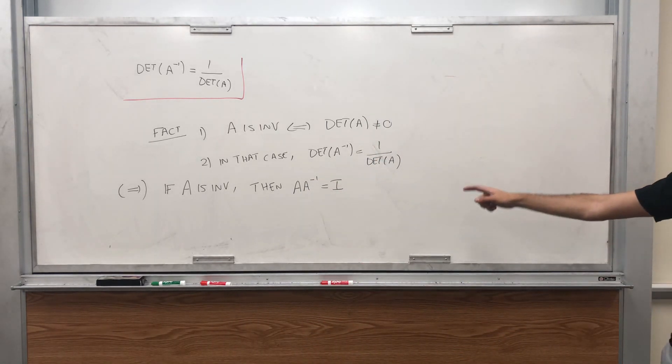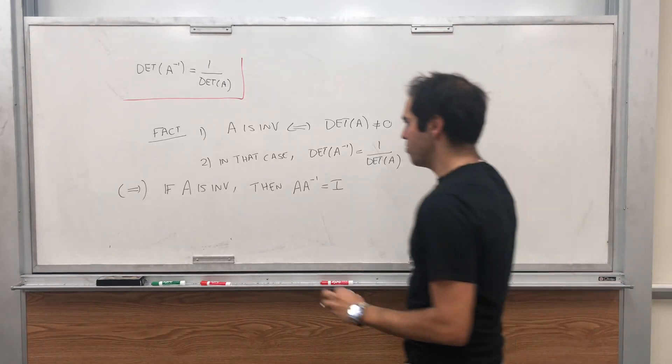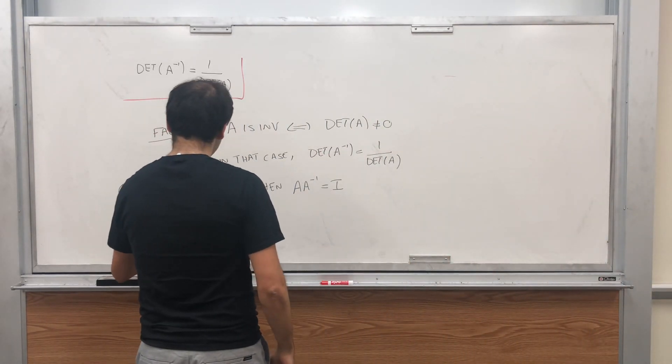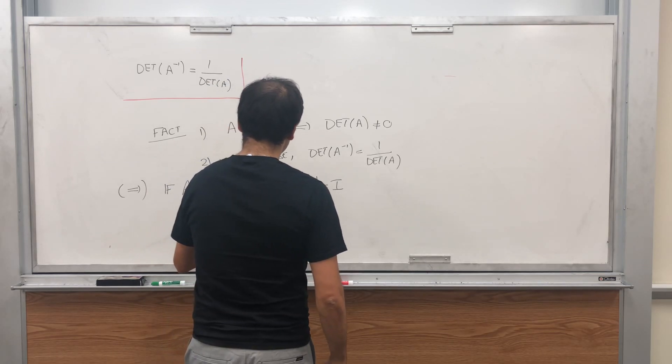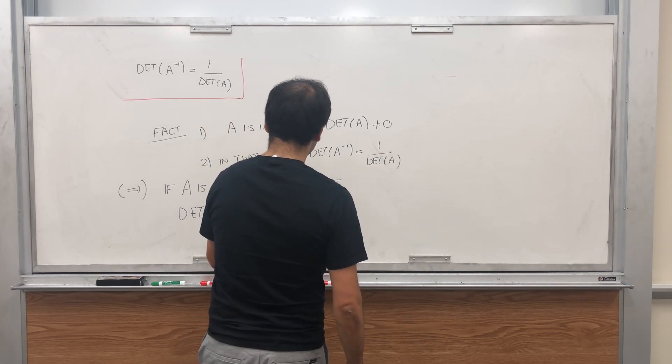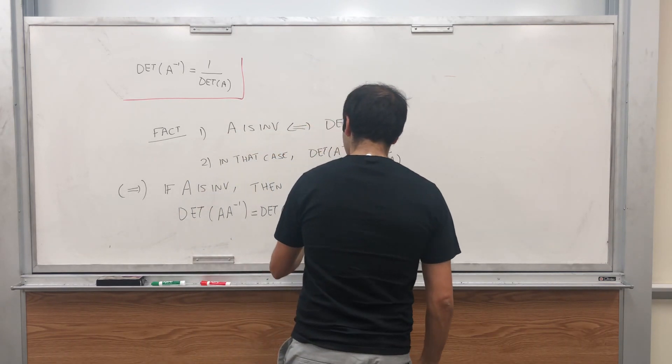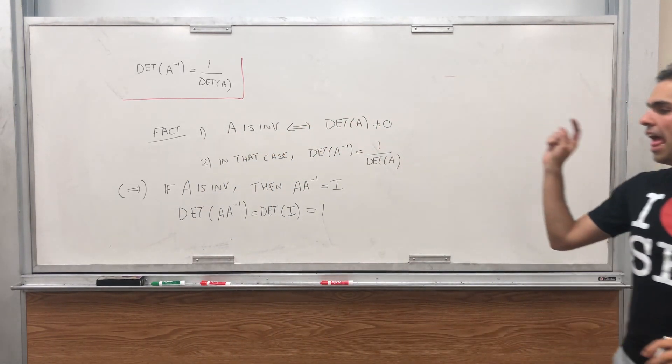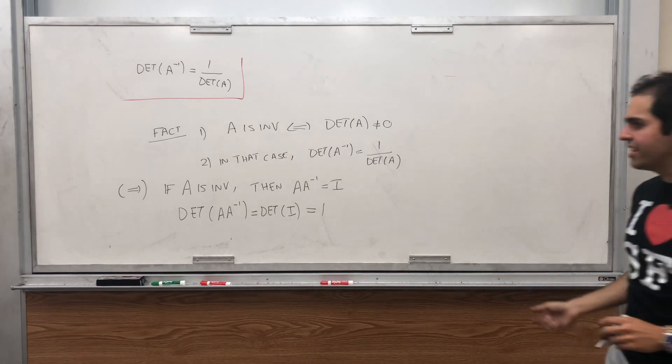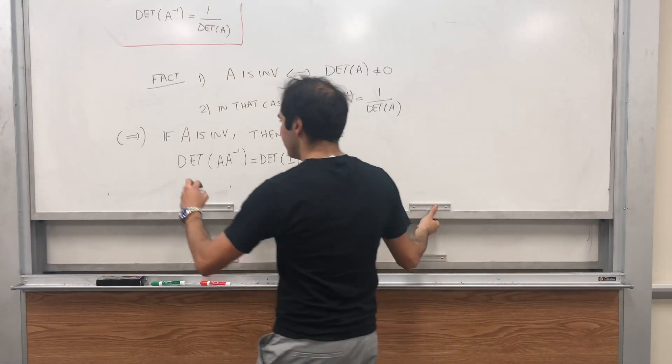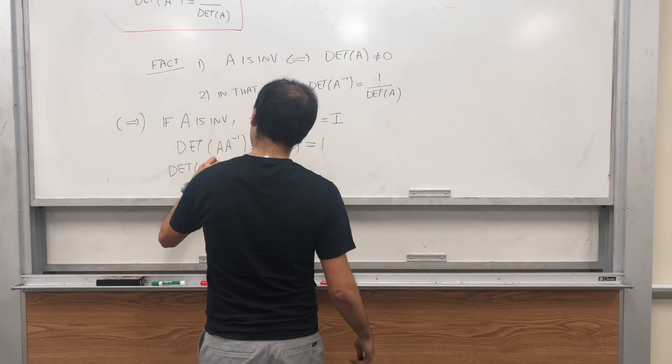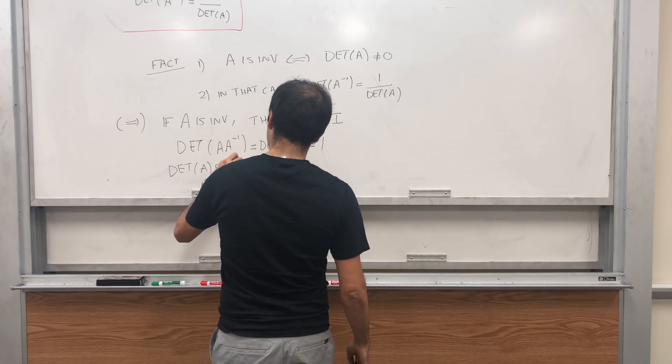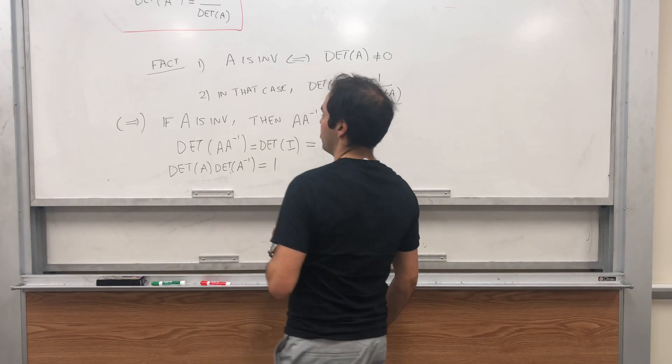And then what we can do, we can put determinants on both sides. So then the determinant of A times A inverse is the determinant of the identity, which is 1. Now, and then we get that the determinant of A times the determinant of A inverse equals 1.